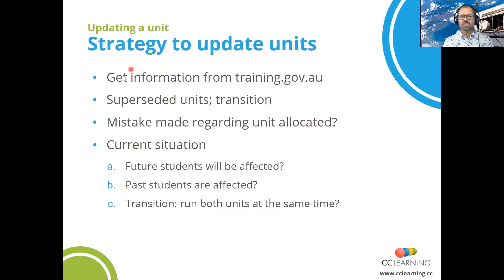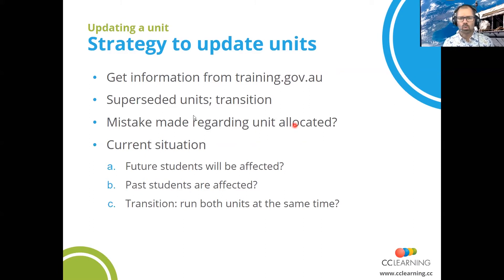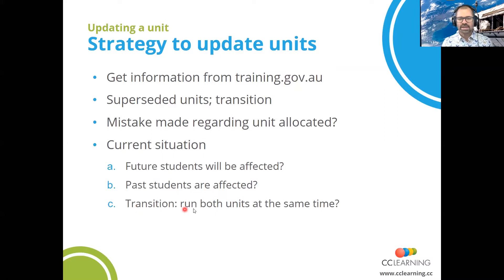Strategy to update the units: first, get the information from training.gov.au, work out if they're superseded units, then plan a transition. Or was there a mistake regarding the unit allocated — did you allocate a unit you don't have on scope? Would it be easier to get that unit on scope, or do you have to change a unit because you mistakenly put it into the students' documents? Consider your current situation: are future students affected? Are past students affected? These are important questions because they impact what changes you need to make. And if you're doing a transition, can you run both units at the same time?